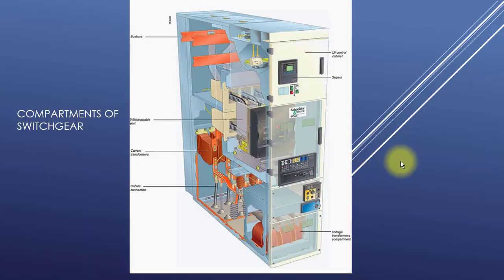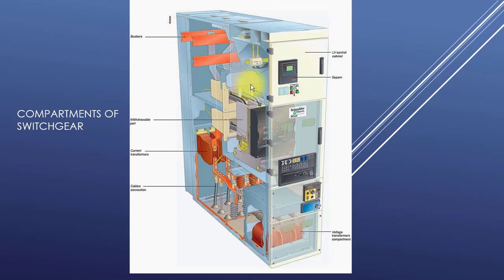Welcome. In this picture you can see the cutout of MV switchgear shown in a 3D picture. This picture is really interesting — that's why I picked this one for explanation. Here you can see the bus bar, so this is the bus bar compartment.